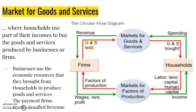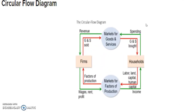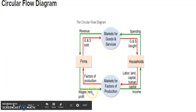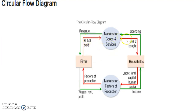The firms produce goods and services, sell the goods and services, and the households buy them. The outer portion of the Circular Flow Diagram is the flow of money, and the inner portion is the flow of economic resources. Businesses use the economic resources bought from households to produce goods and services, and the payment firms receive is called revenue. In summary: in the market for factors of production, households sell resources and firms pay them income; in the market for goods and services, firms sell goods and services, households buy them and spend part of their income, which becomes revenue for the firms.